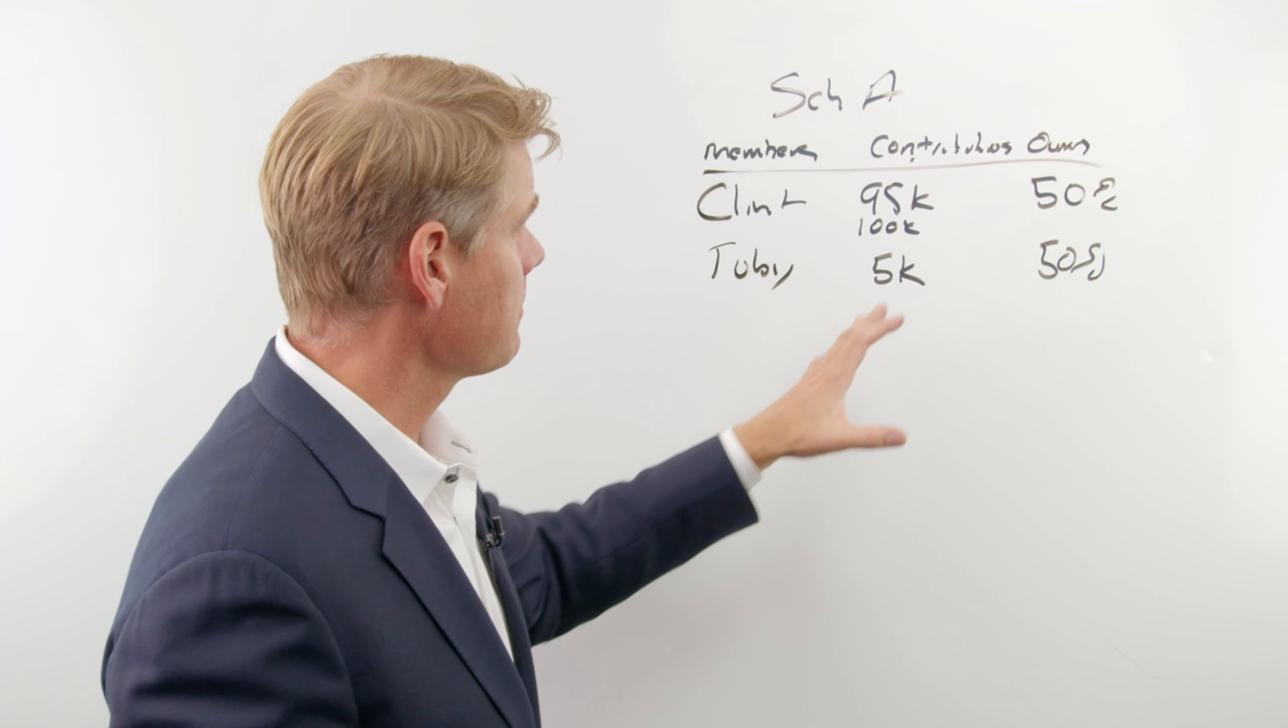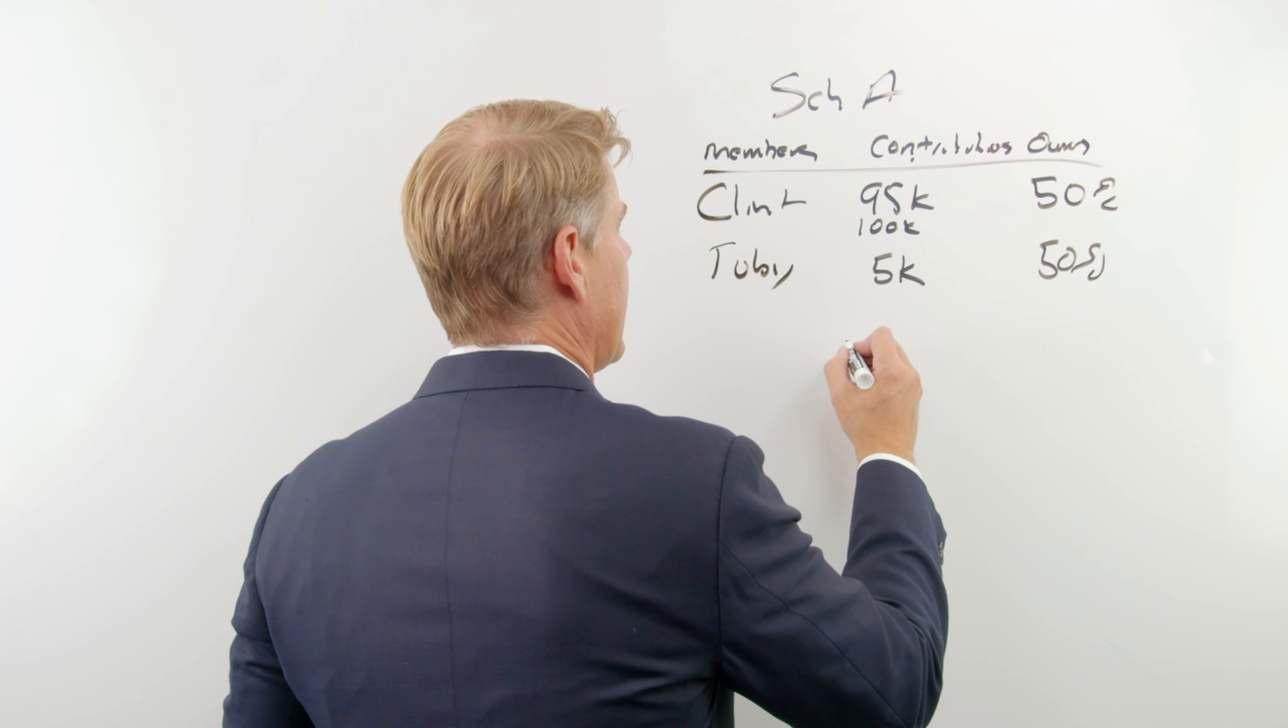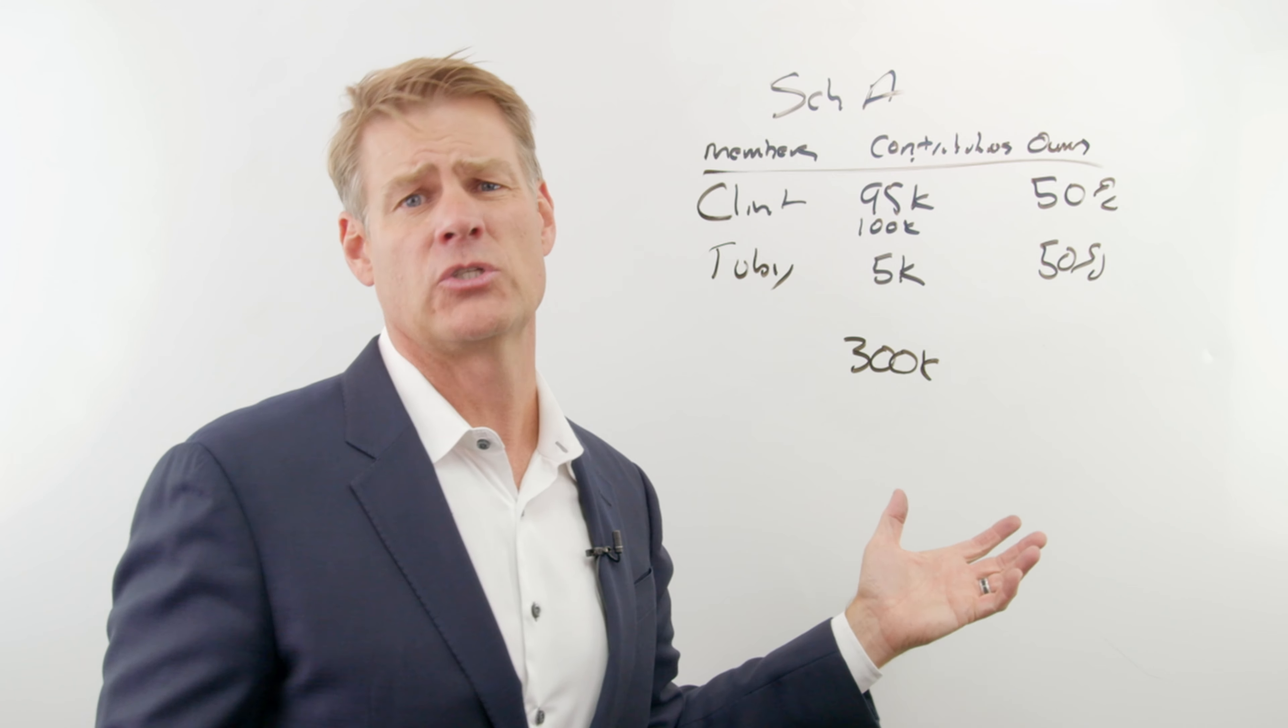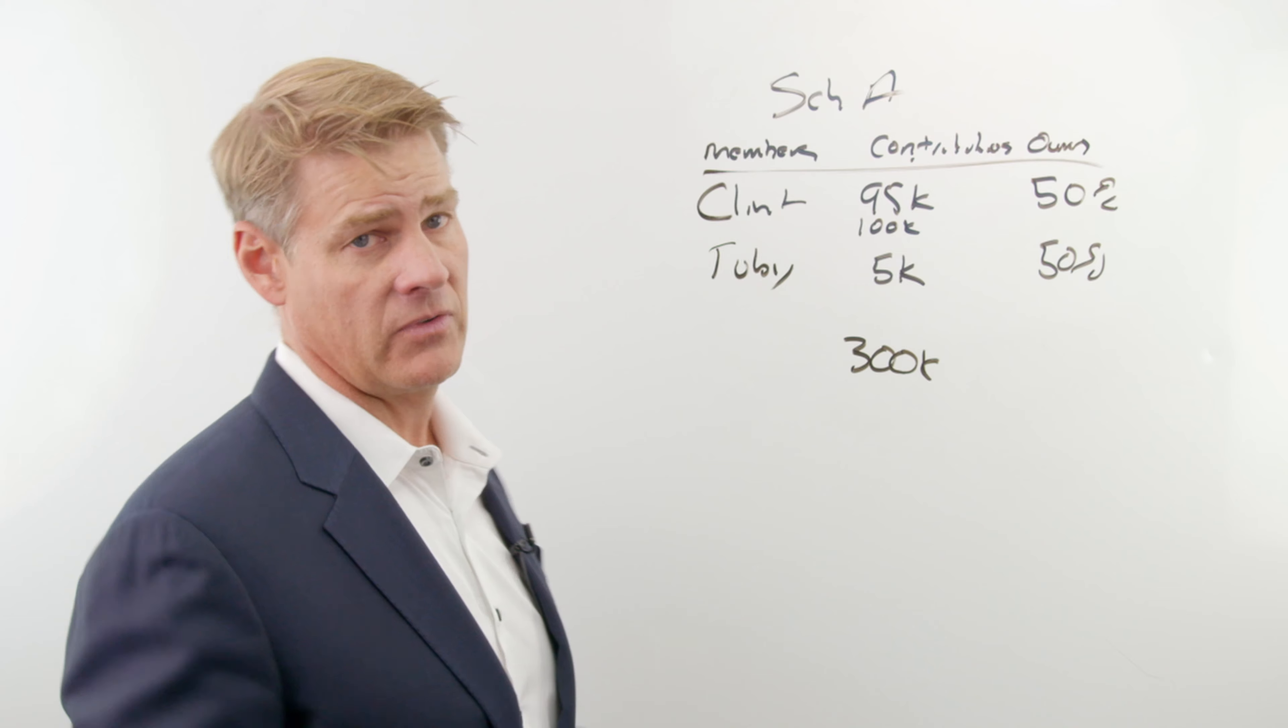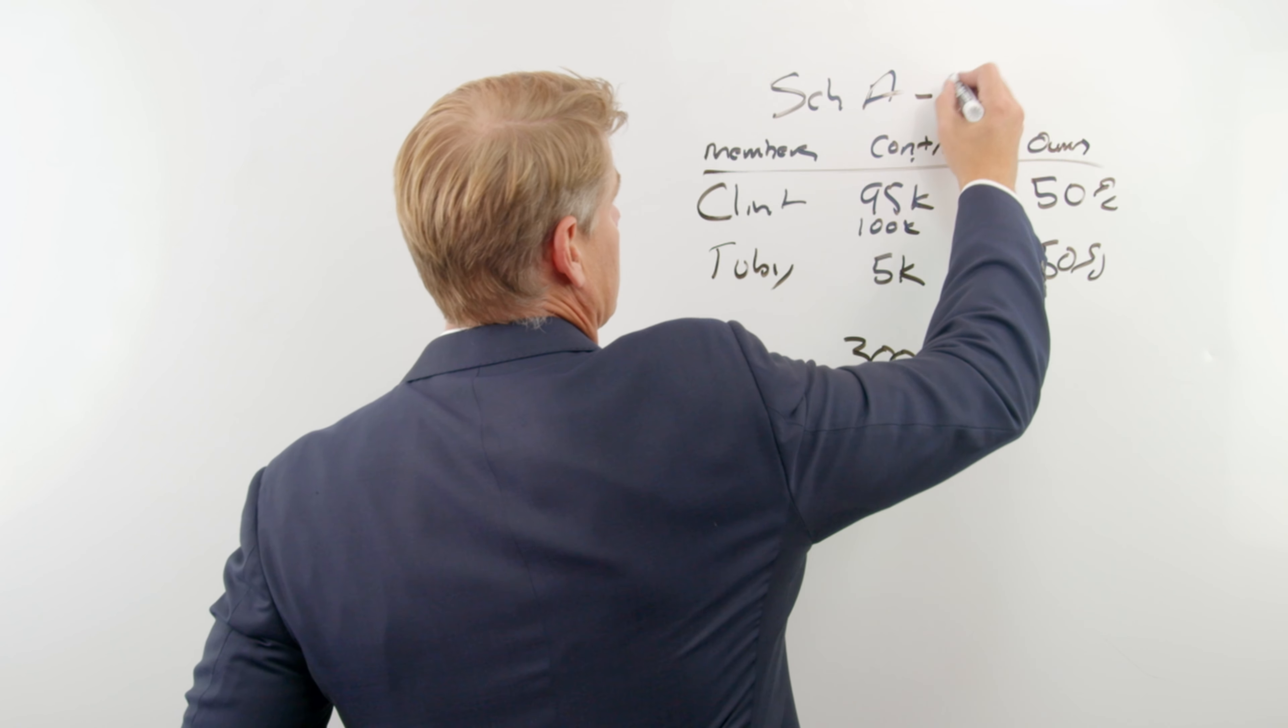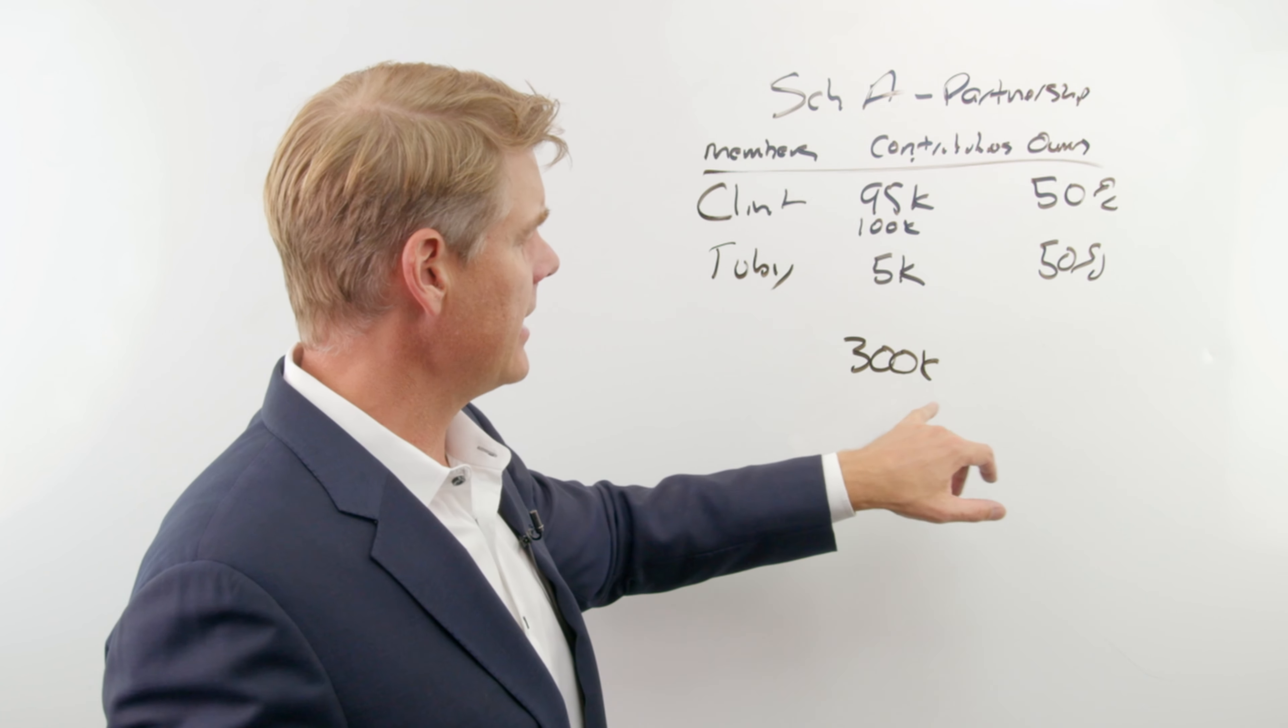And the reason why you want to do this is twofold. The first reason is that when it comes to distributions, let's say that we liquidate the LLC, and we sell all the assets, and we have $300,000 inside of our LLC. A lot of people will look over here and say, well, you guys are 50-50, so you're gonna split it 50-50. 150 to Toby, 150 to Clint. Well, that's not the way LLCs work. The first thing you're gonna look at, and this LLC, by the way, is gonna be treated as a partnership for tax purposes, because there's two of us.